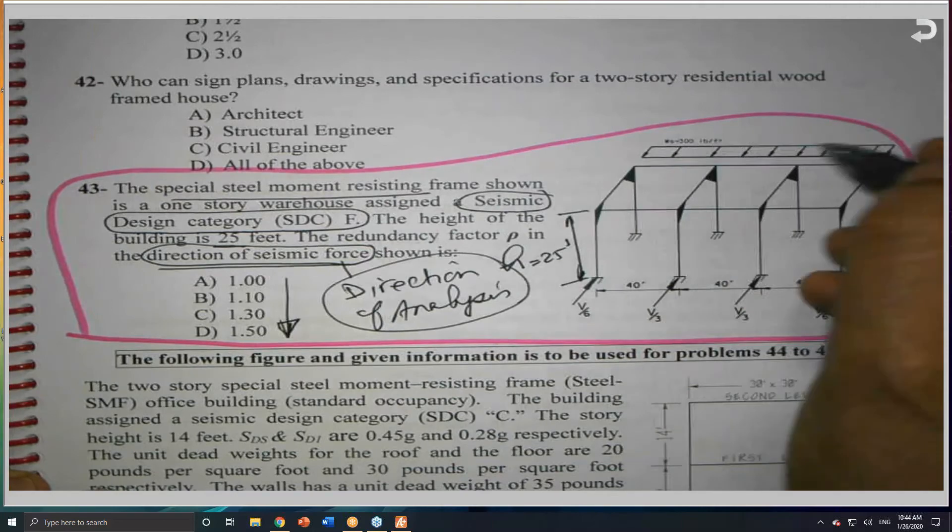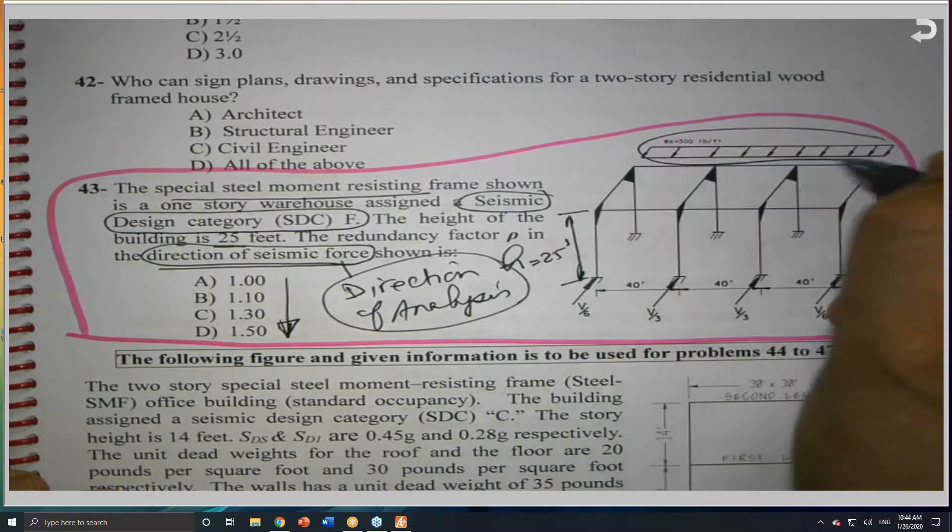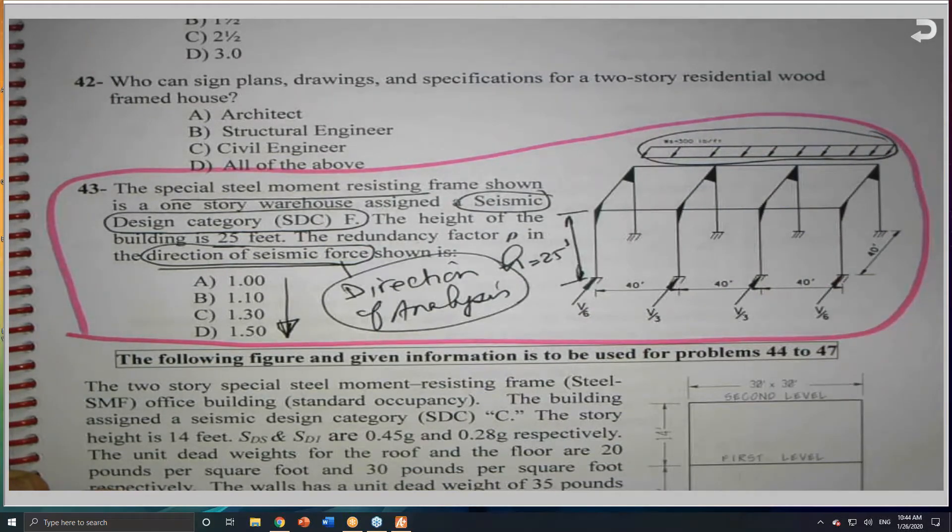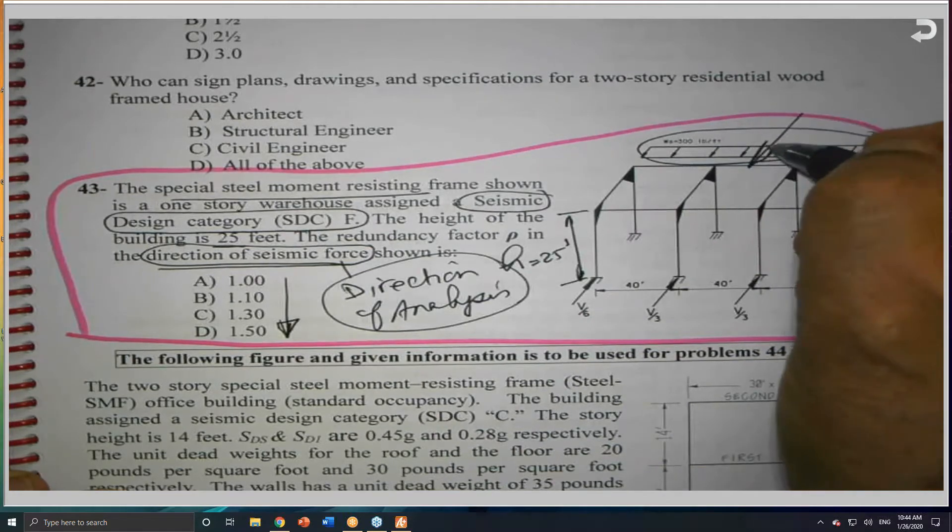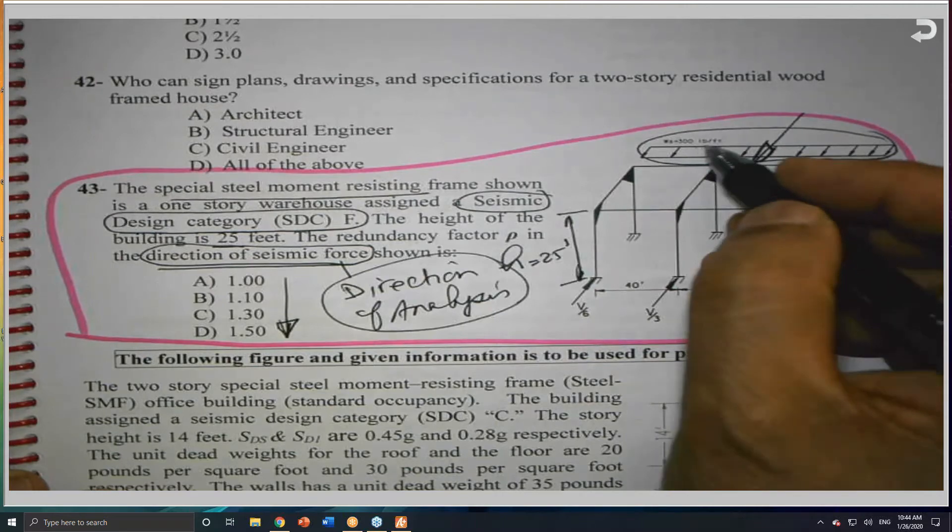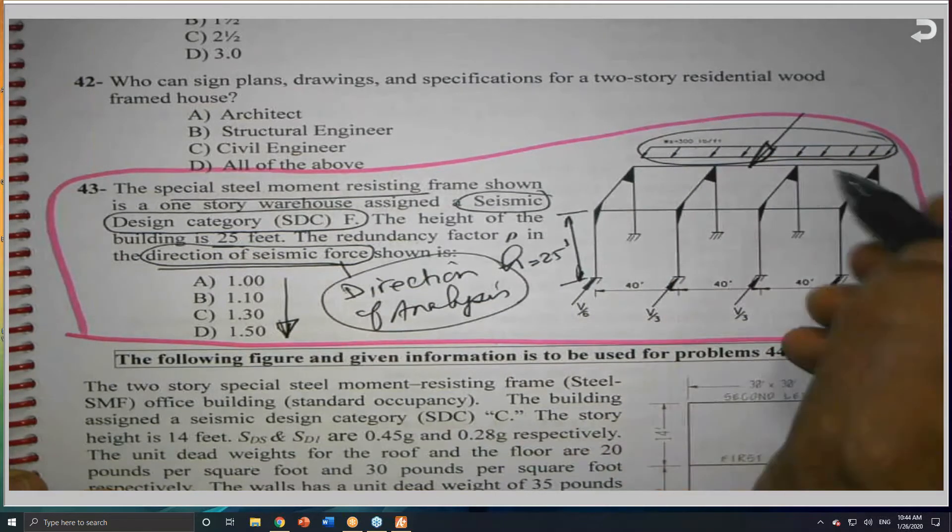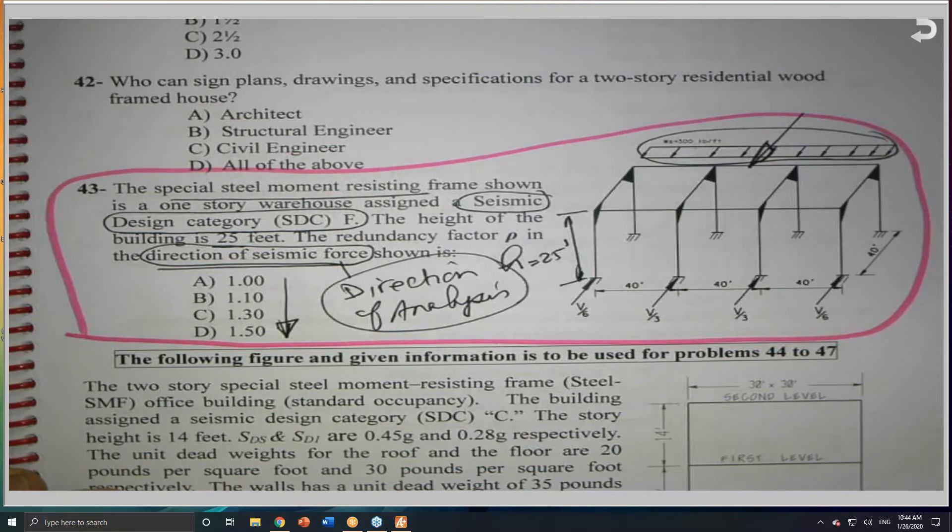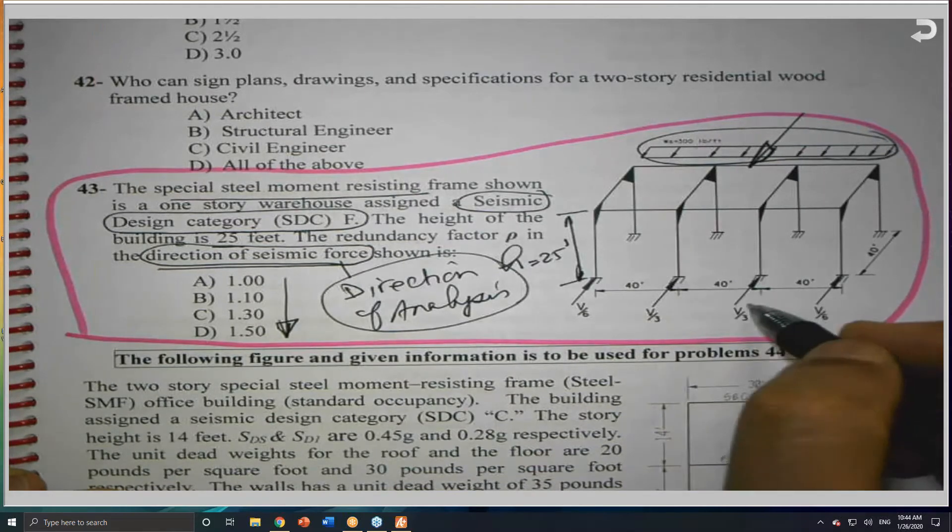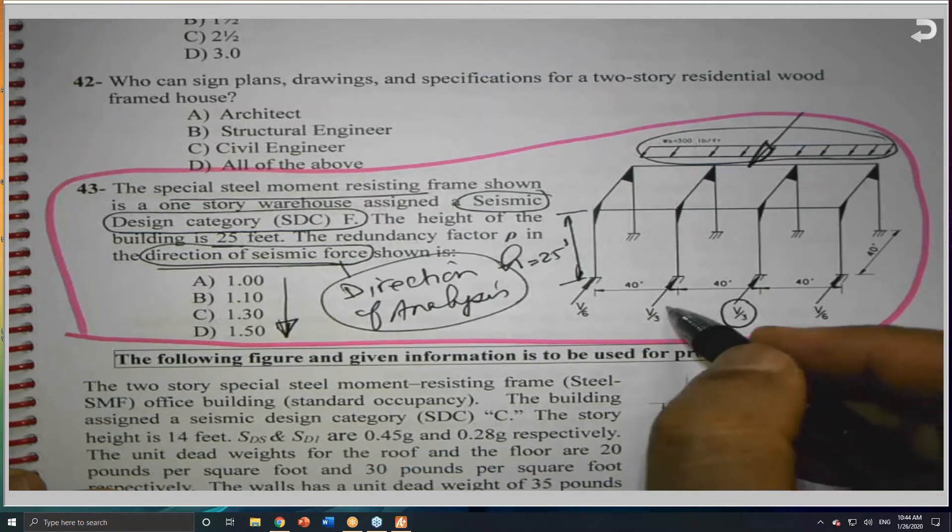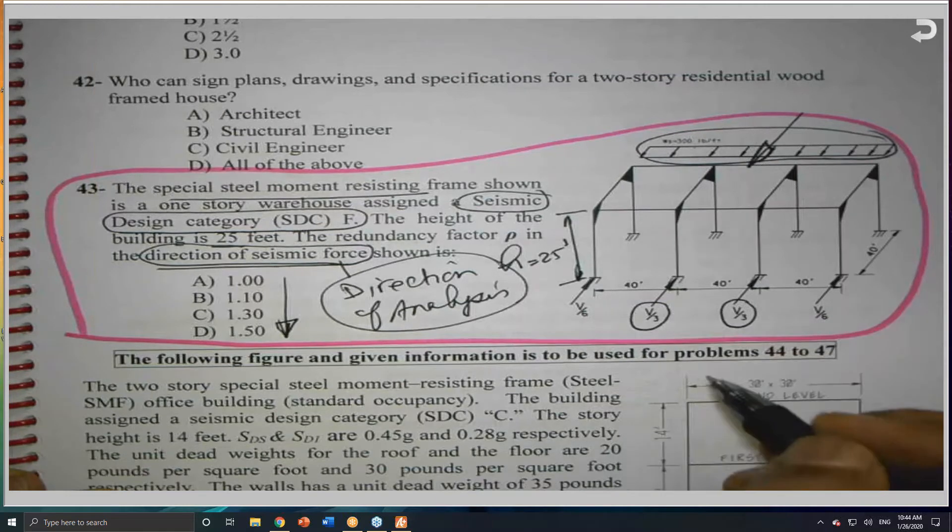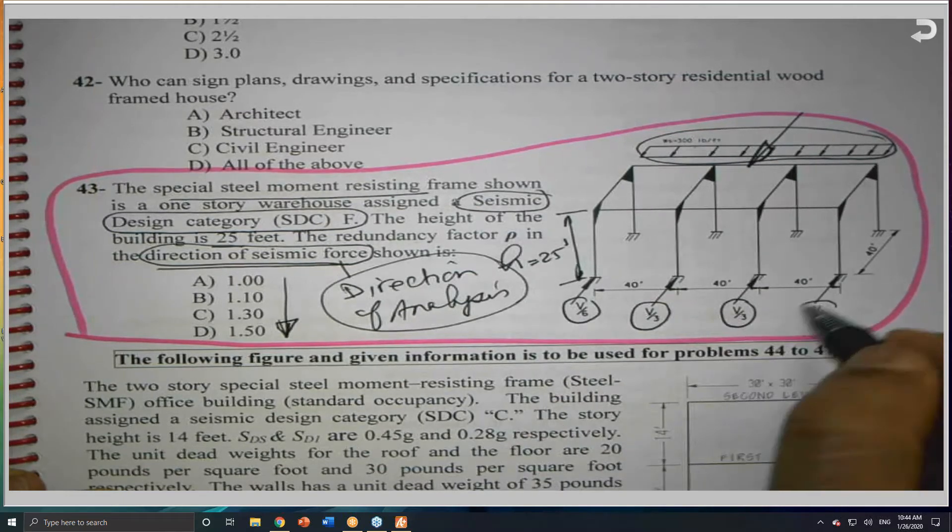Here he gave you the seismic force. This seismic force is coming this way. W, whatever W is, 300 pounds per linear foot, a distributed load. And he said that the middle frame is carrying one-third. The second middle frame is one-third. And this is one-sixth, and this is one-sixth.